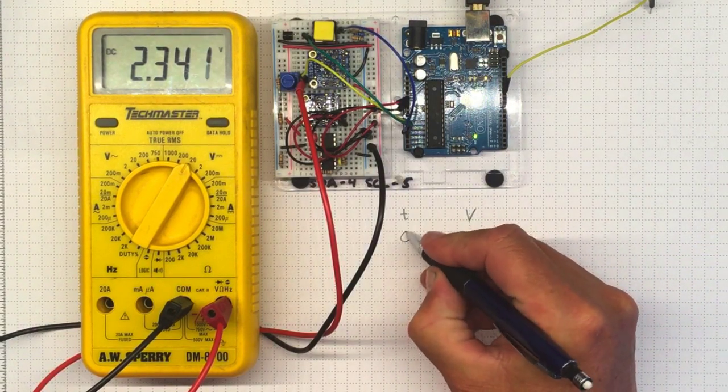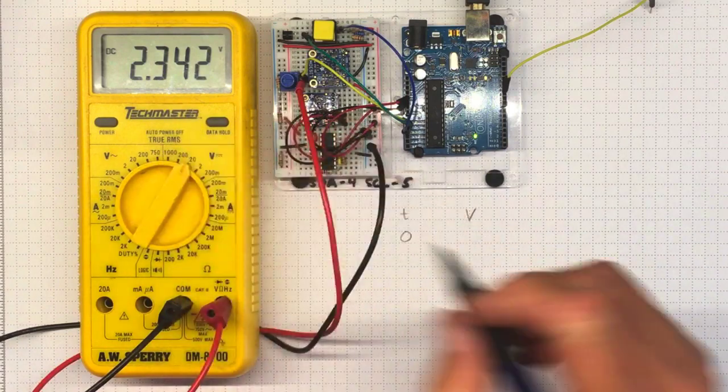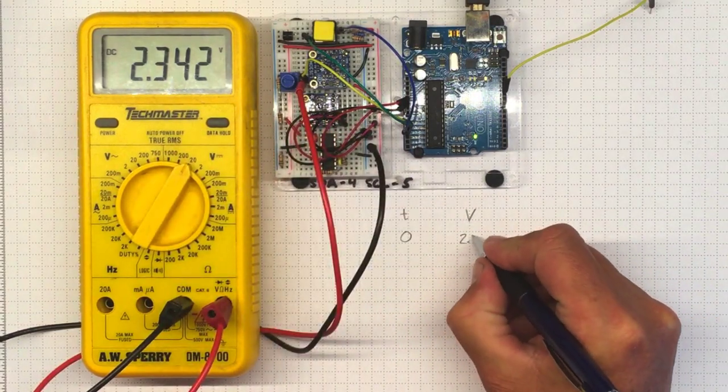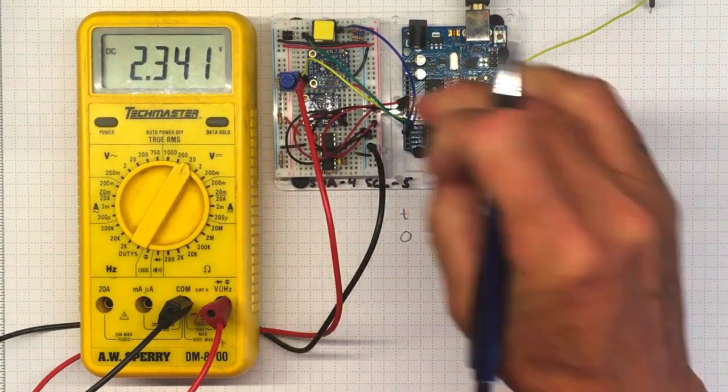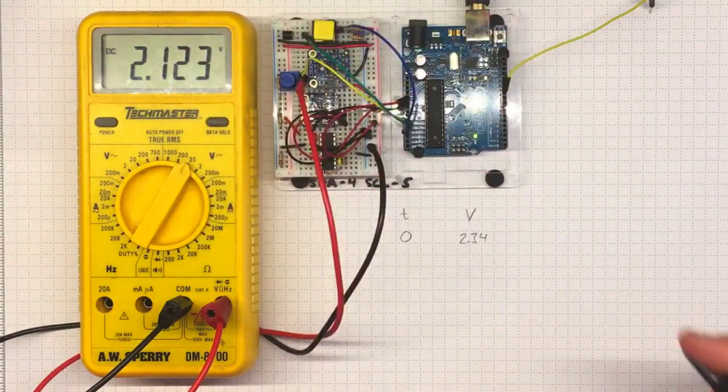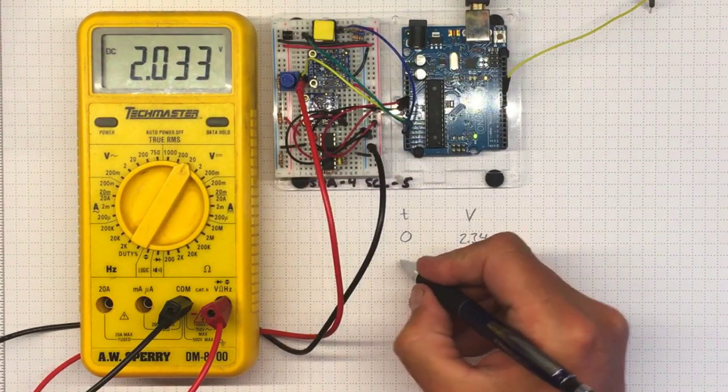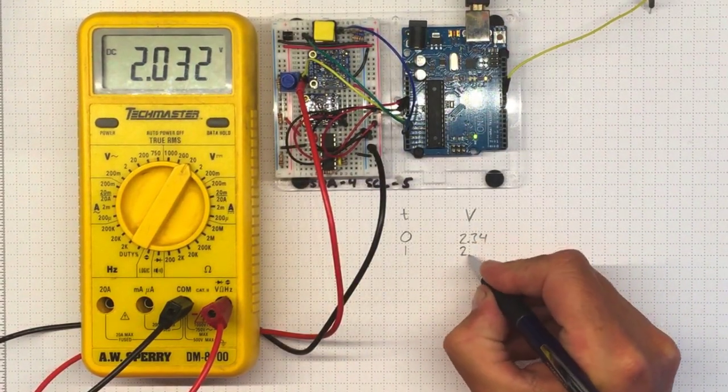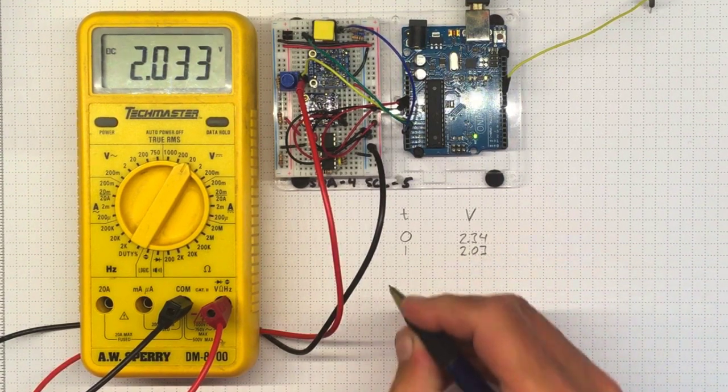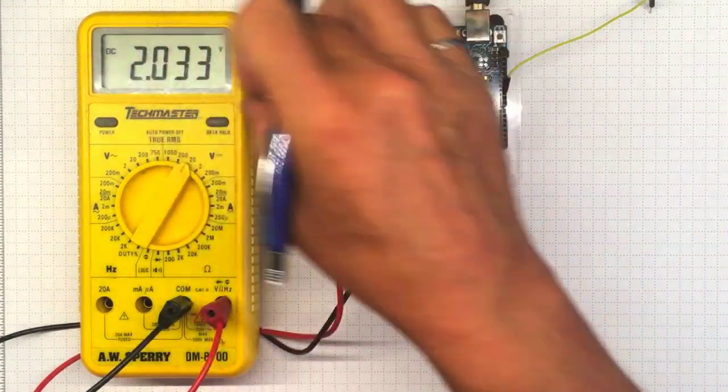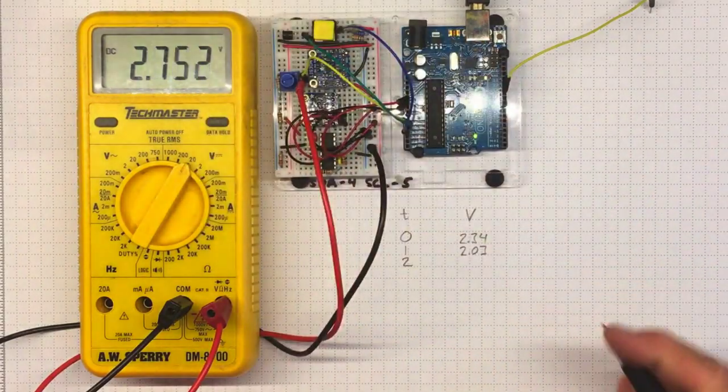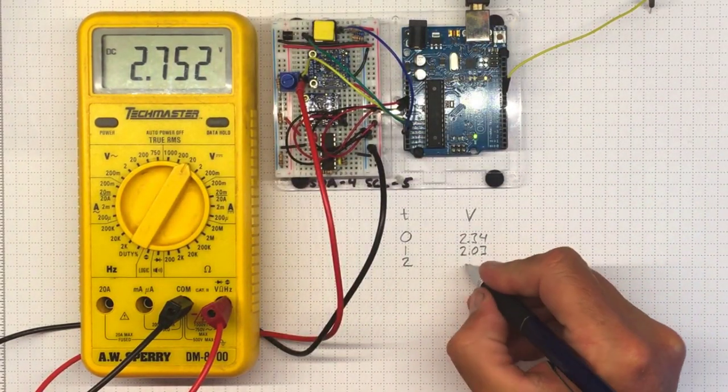So at time 0, I see 2.34. At time 1, I see 2.03. At time 2, I see 2.75.